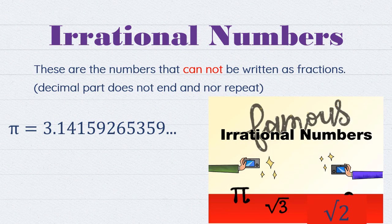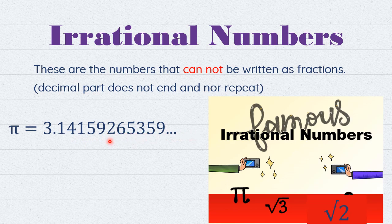Finally, irrational numbers are numbers that cannot be written as a fraction. The decimal part does not end and does not repeat. A famous example is pi — it does not end and it does not have a repeating portion, so it is called an irrational number.